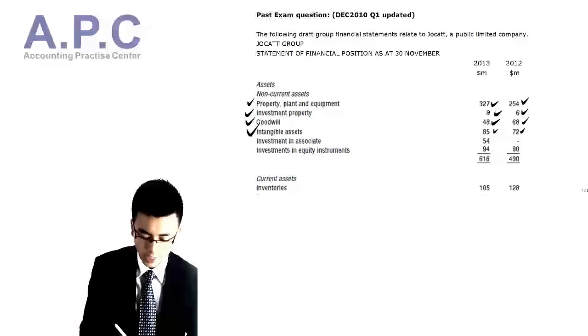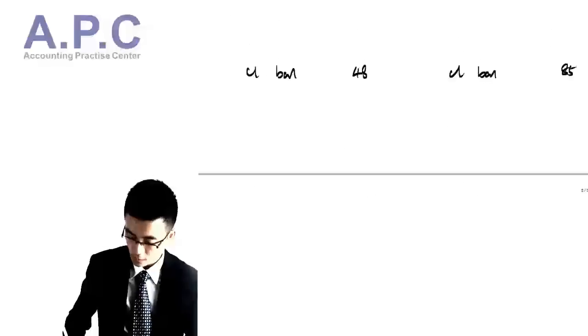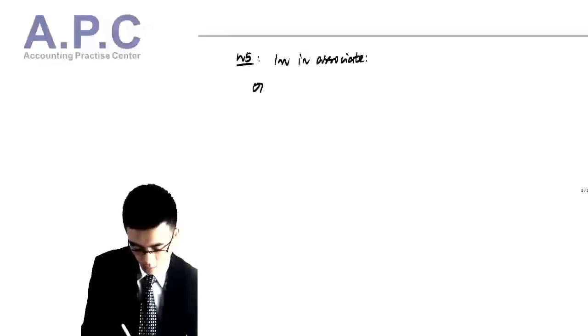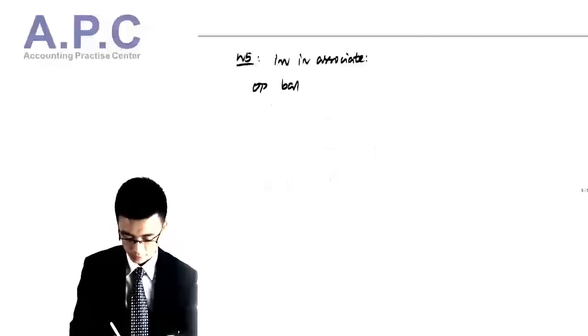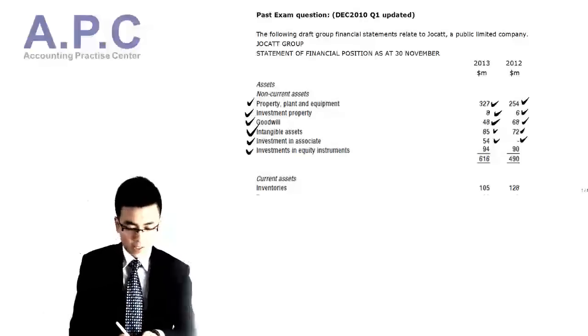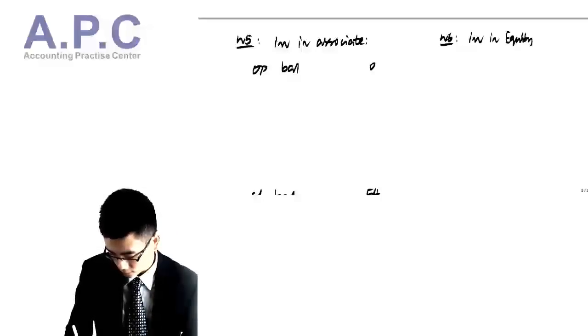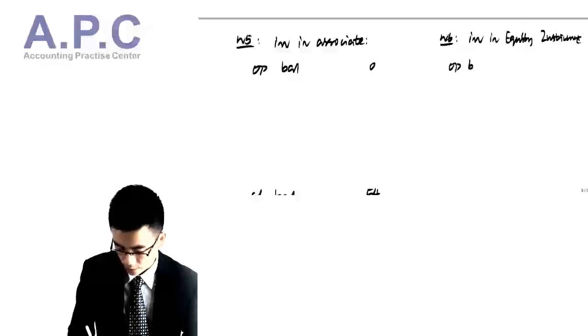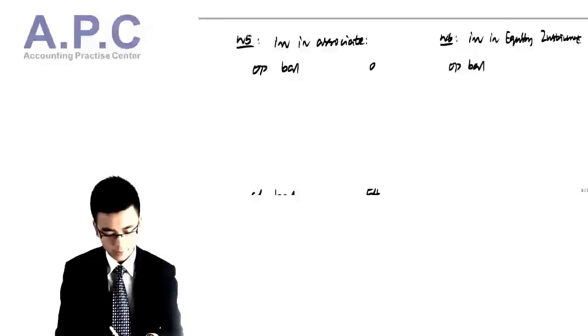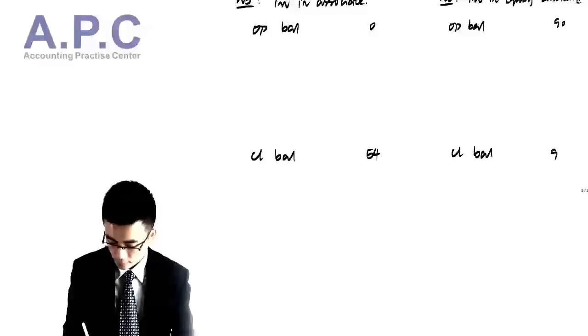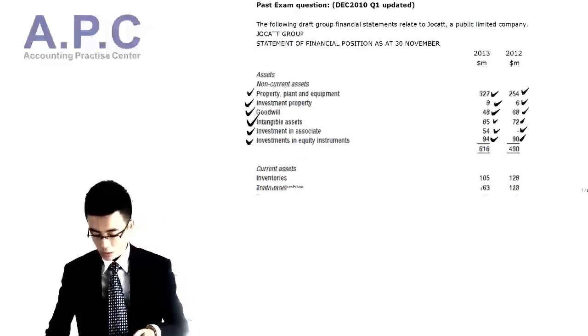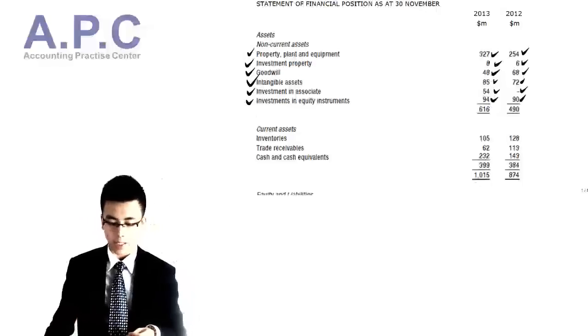We've got investments in associates — working number five. The opening balance is zero and the closing balance is 54. We've also got investments in equity instruments, which means we own shares in other companies. The opening balance is 90 and the closing balance is 94. Then for current assets, we have inventory, trade receivables, and cash and cash equivalents.